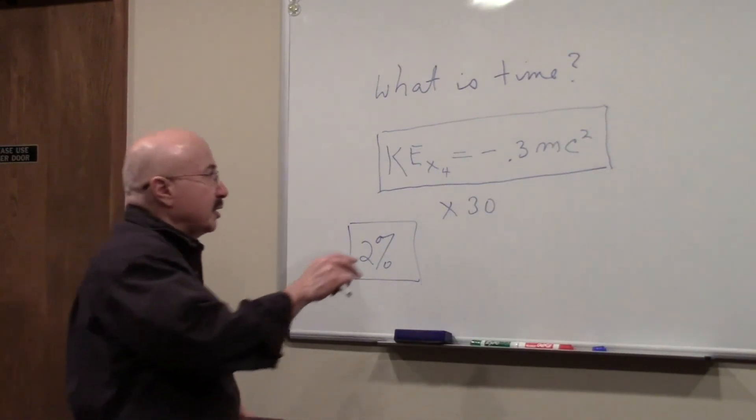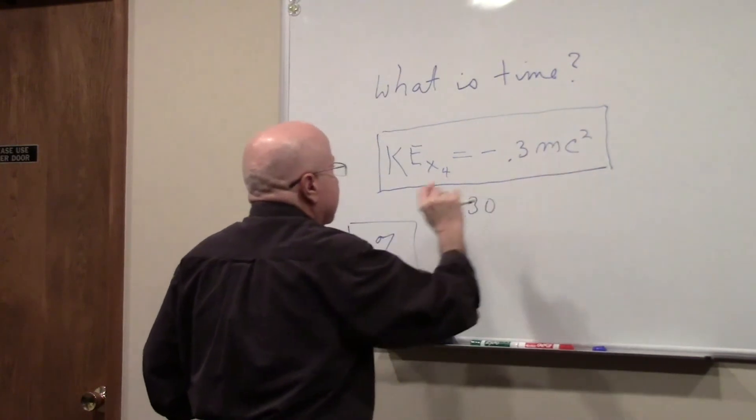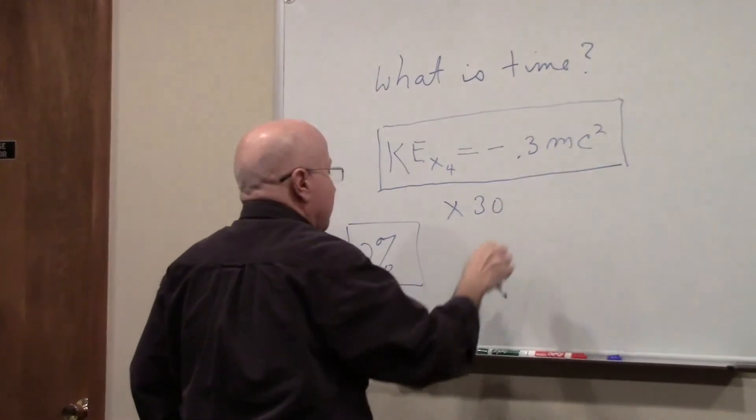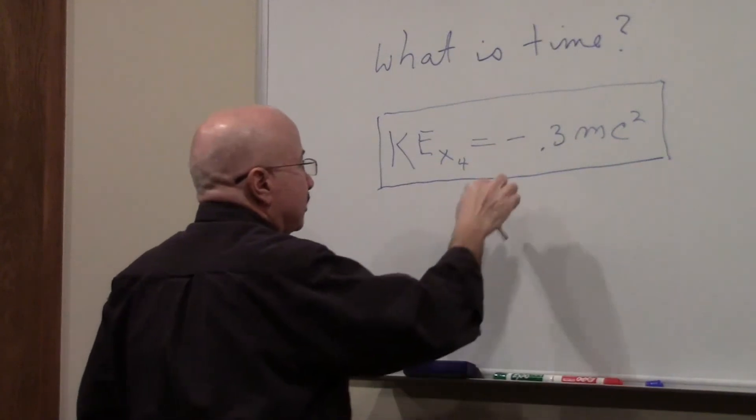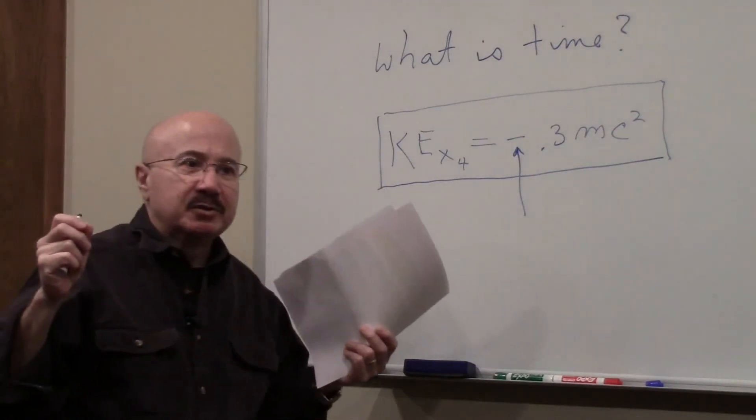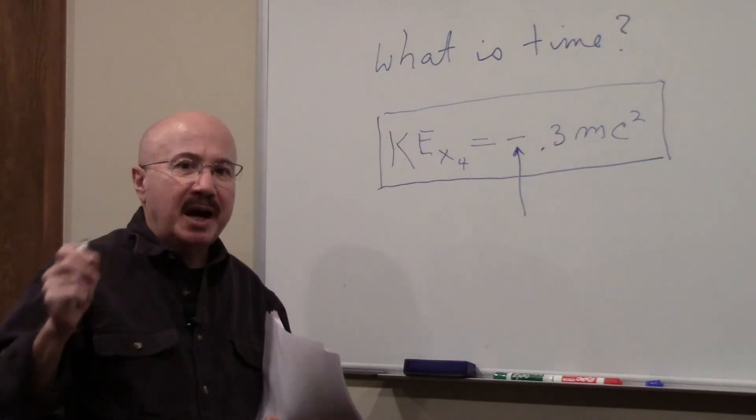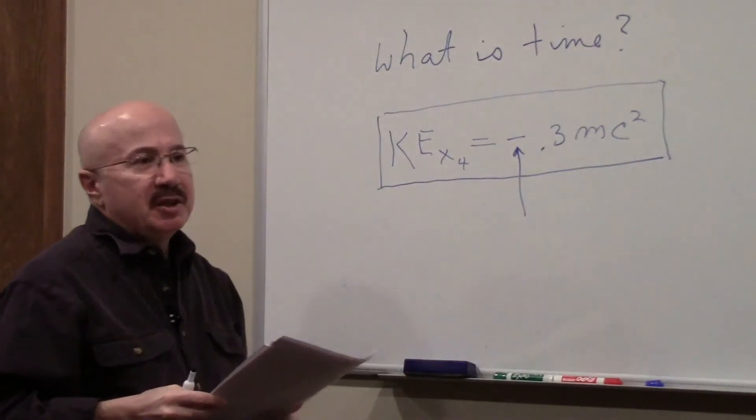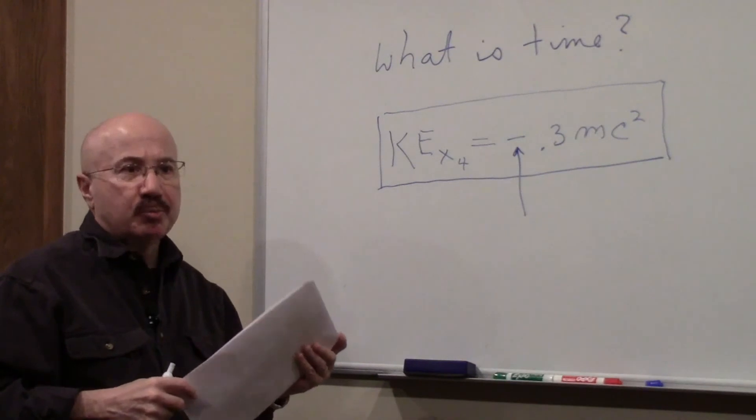Now I want to point out that the equation is dimensionally correct. This is energy. This portion of it is energy. But what's very unusual is this negative sign. Almost everything that we have in our normal three-dimensional space has a positive kinetic energy. This has a negative.